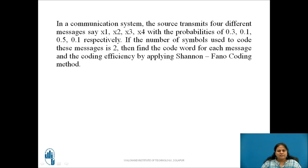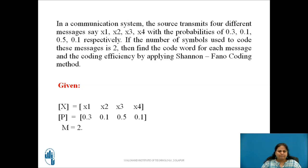Let us understand this with an example. In a communication system, the source transmits 4 different messages say x1 to x4 with the probabilities 0.3, 0.1, 0.5 and 0.1 respectively. If the number of symbols used to code these messages is 2, find the codeword for each message and coding efficiency by applying Shannon-Fano coding method. Here, messages are x1 to x4 with their probabilities 0.3, 0.1, 0.5 and 0.1 respectively, and m equals 2 with symbols 1 and 0.